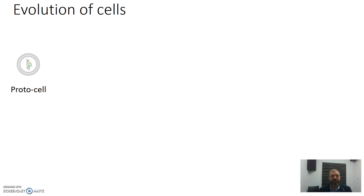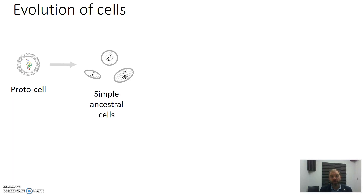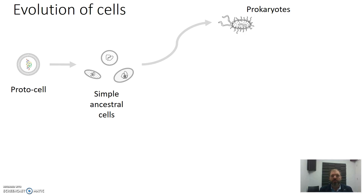Taking it as an assumption that there's some sort of pre-cell protocell that has RNA in a membrane — if these are self-replicating, we might expect a population with some diversity of ancestral cells. The next assumption is that these might then evolve over time to create something that resembles an early prokaryote, giving us the beginnings of the prokaryotic cells we still have today. These have a simple genetic material in a DNA loop, with some proteins and ribosomes, and a membrane around it.